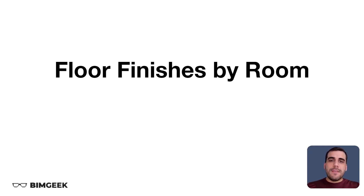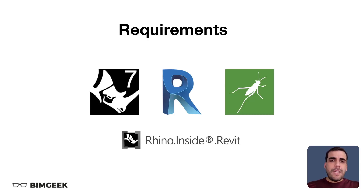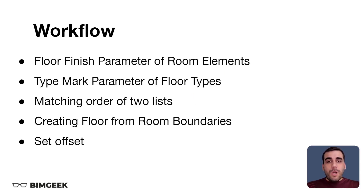Hi, this is BIMGeek. In this video we are going to be creating floor finishes by room boundaries using Grasshopper inside Revit. To be able to use Grasshopper inside Revit, you must have Rhino 7 installed on your device and a compatible Revit version — I think it's 2018.3 or later. I'm using Revit 2022.